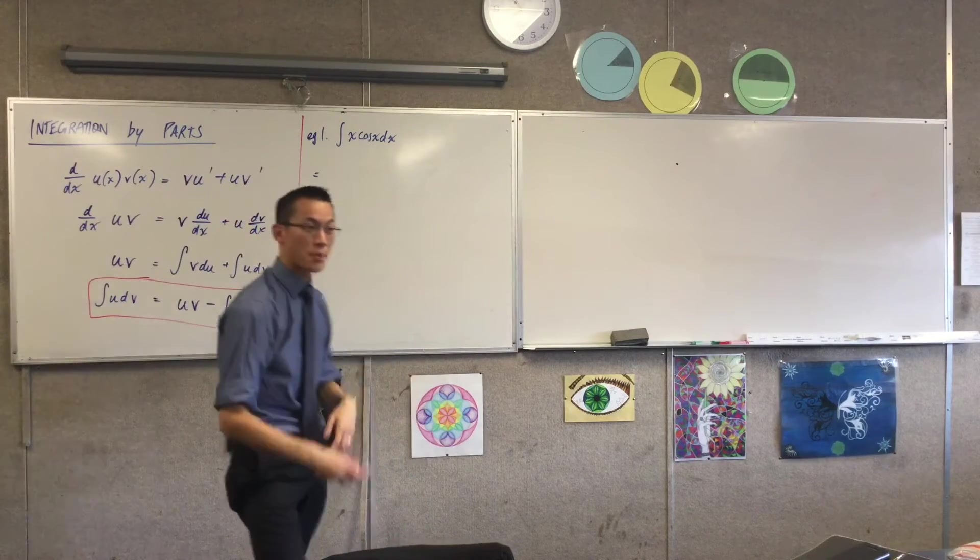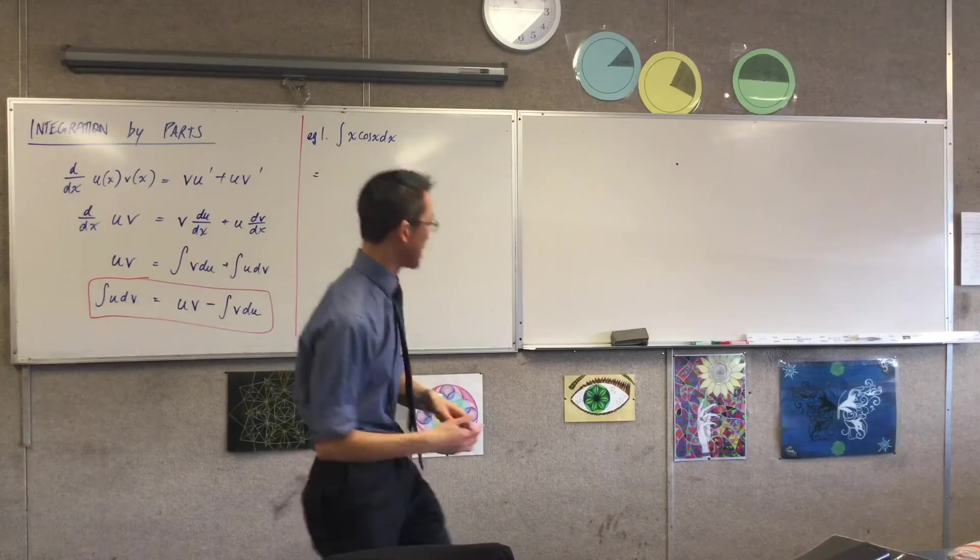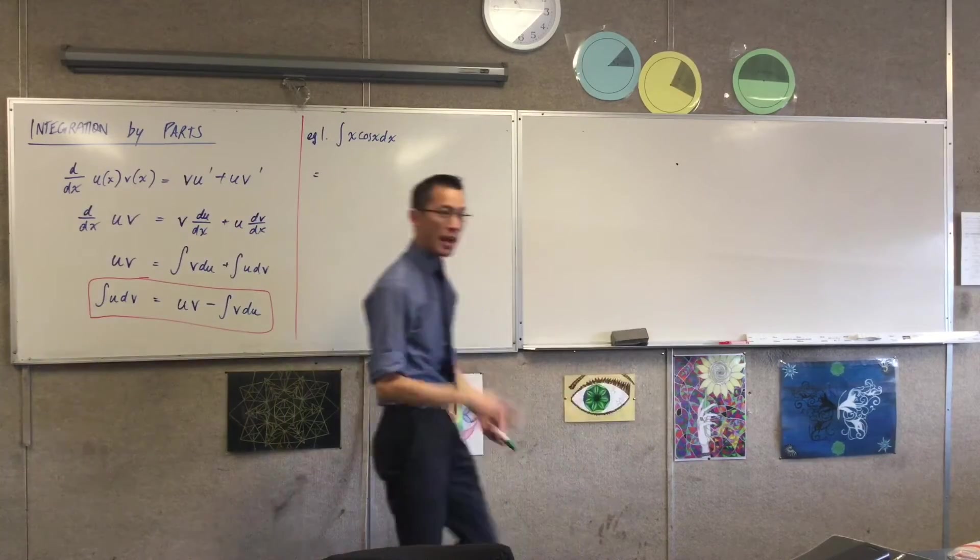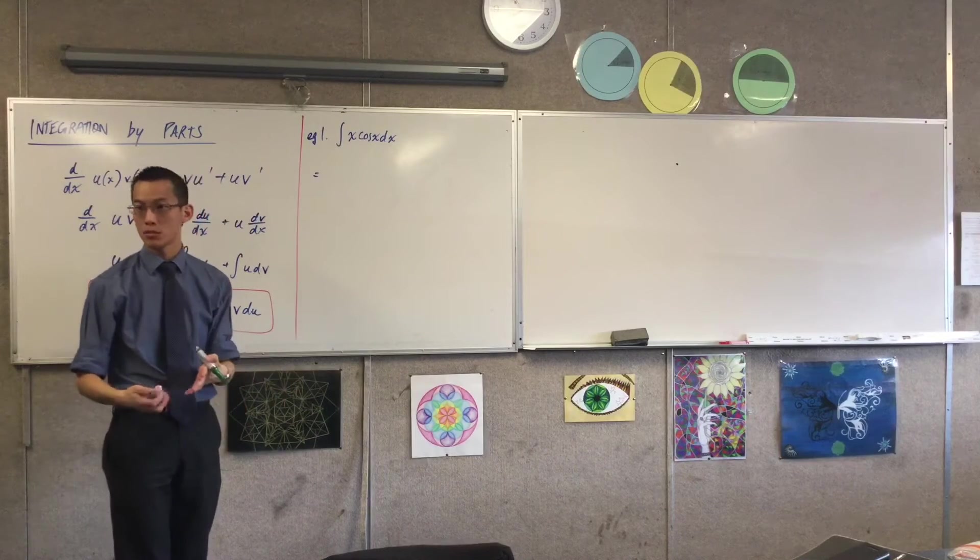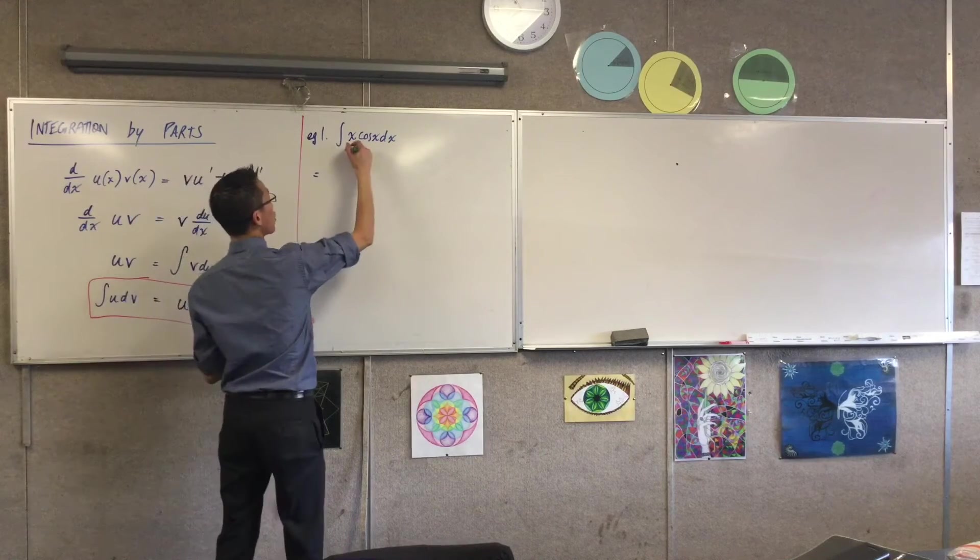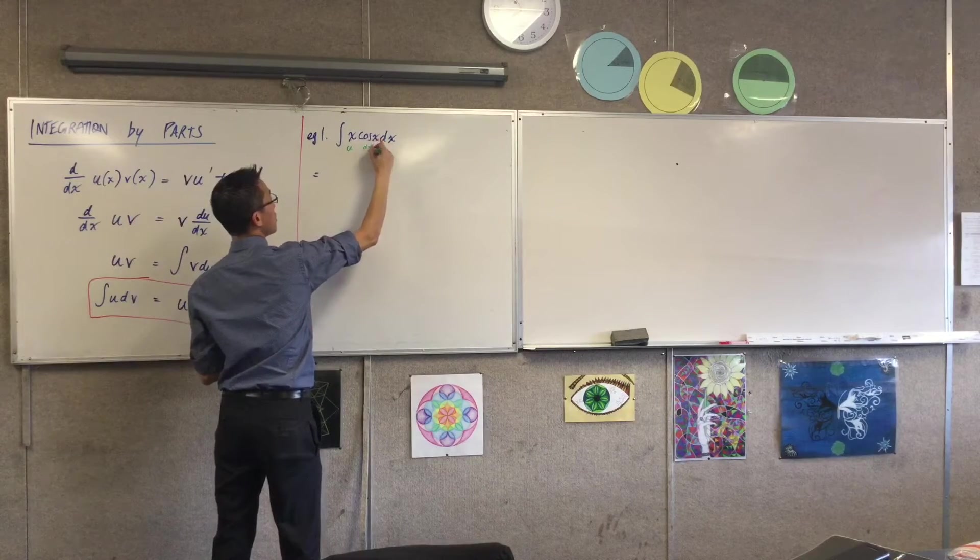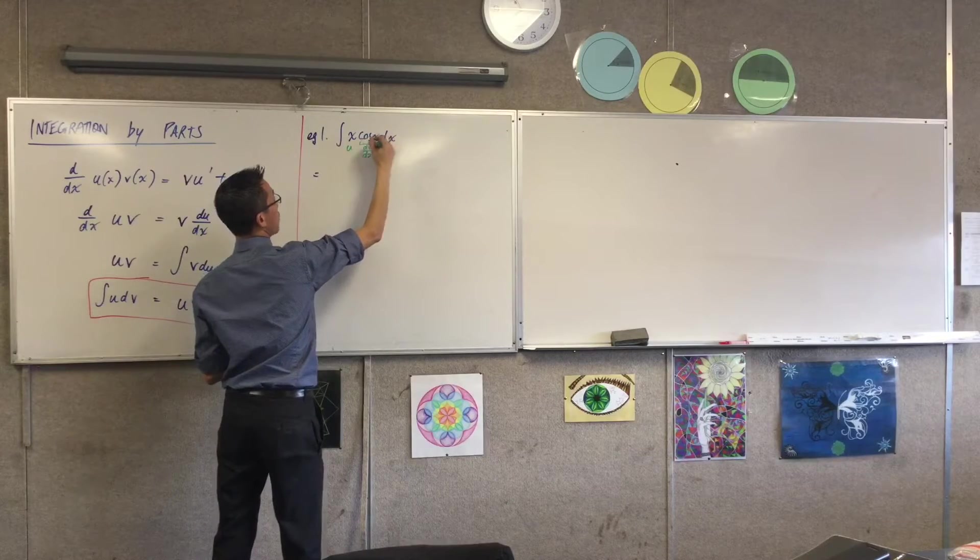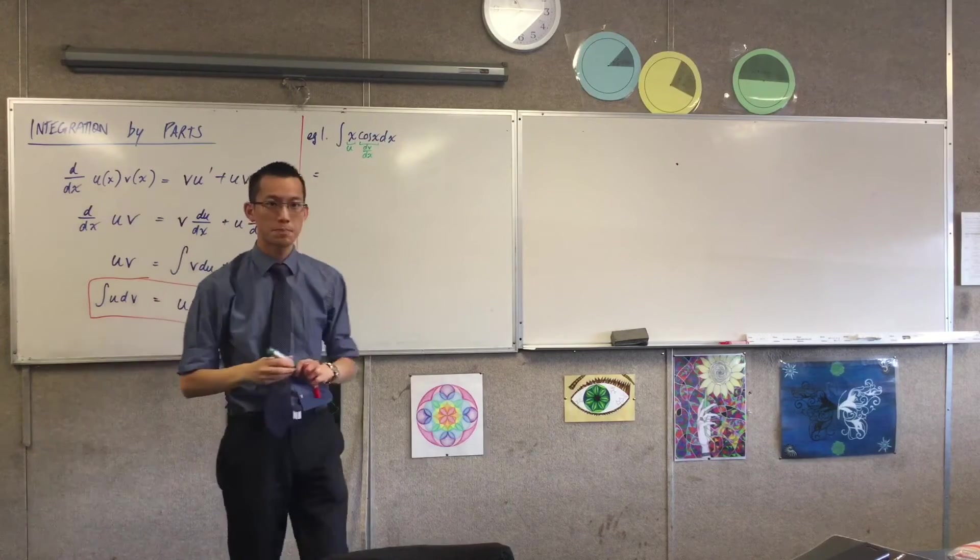So what I'm going to do is I'm going to sort of just be easy on you. I'm going to tell you which one's which and then we'll see after we finish this question what happens when you choose them poorly. So I'm going to call this one u and I'm going to call this one dv/dx.